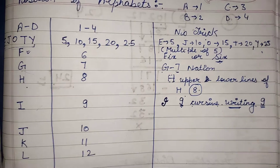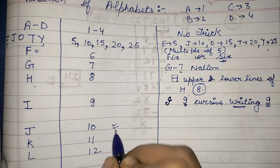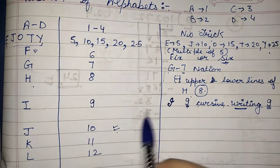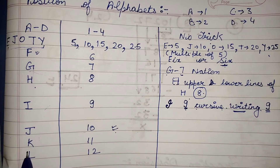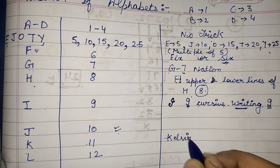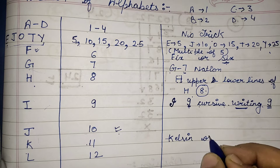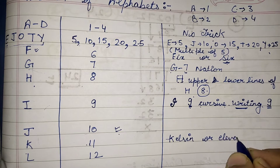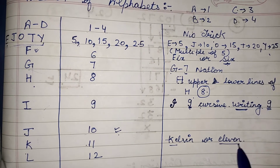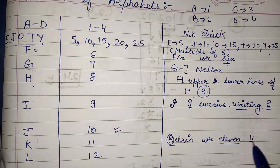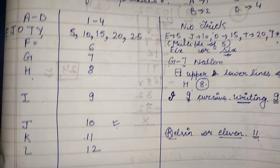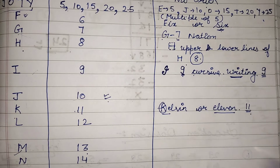J we have already remembered with the EJOTY trick — J is present at the tenth position, no need to remember it again. Coming to K: with the word 'Kelvin' or 'eleven' — these are somewhat similar — we can remember that K is present at the eleventh position in the alphabets from A to Z.